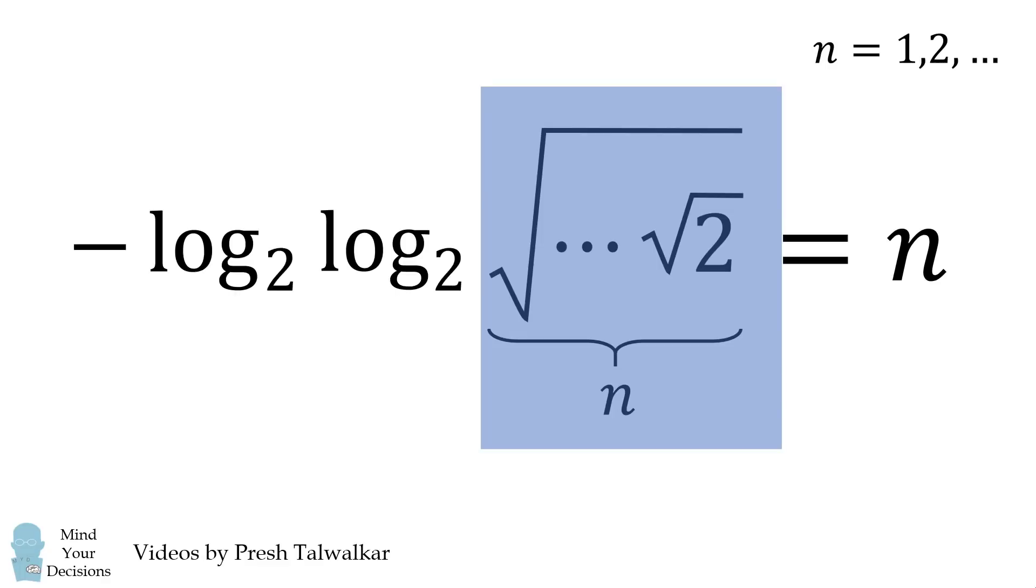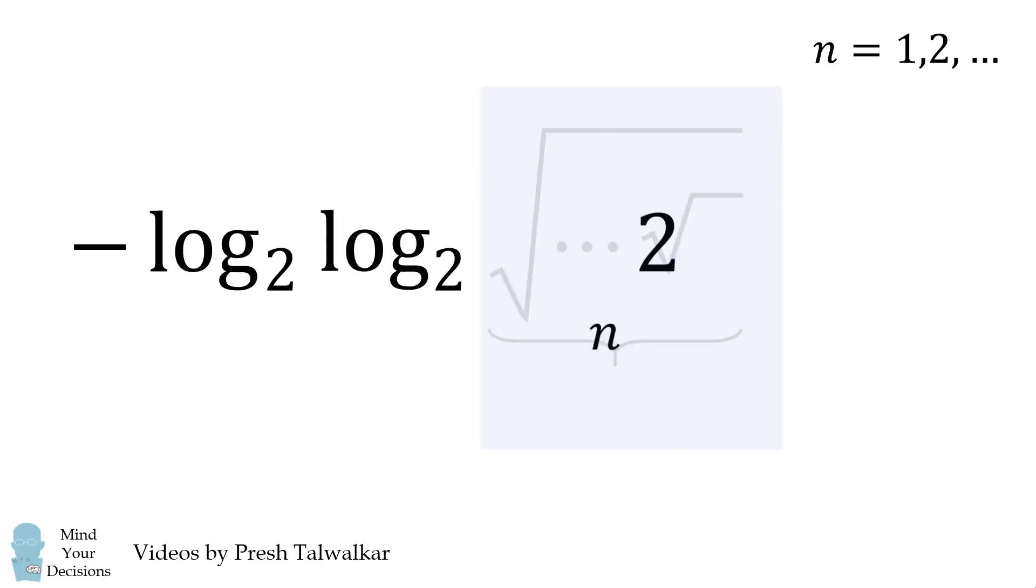If we iterate the square root function a total of n times, we'll end up with 2 to the power of 1 over 2 to the power of n. This is also written as 2 to the power of negative n.